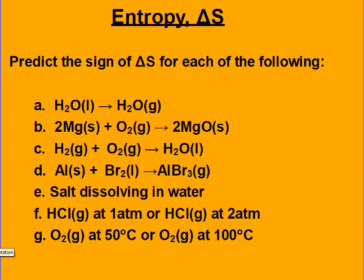Let's look at this first problem. When you're given a reaction and it has different numbers of gases on both sides, you can look just at the number of gases. We went from zero moles of gas to one mole of gas. Gases are going to be more dispersed and have more microstates, so that's going to be an increase in delta S, or entropy.